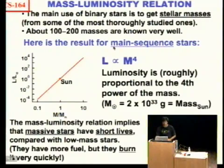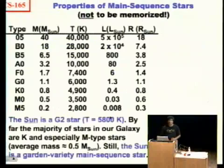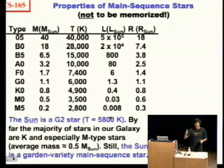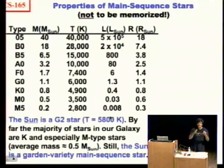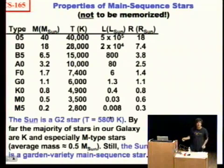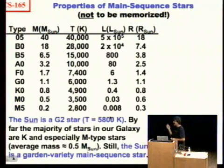This is an extremely important result for main-sequence stars. We've determined the temperatures of stars from their spectra, the distances from the parallax, the luminosity from a measurement of the distance and the apparent brightness, the mass from binary stars, and the radius using L equals 4 pi r squared sigma T to the fourth. Now let's see if there are any trends.